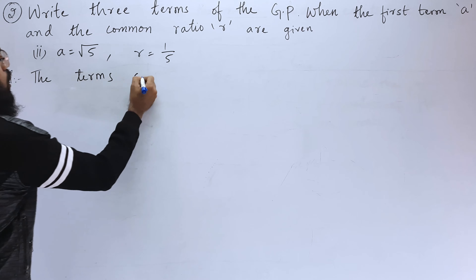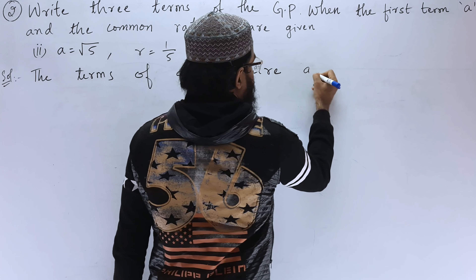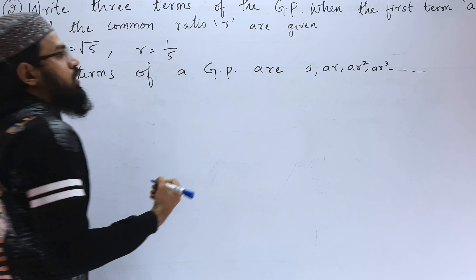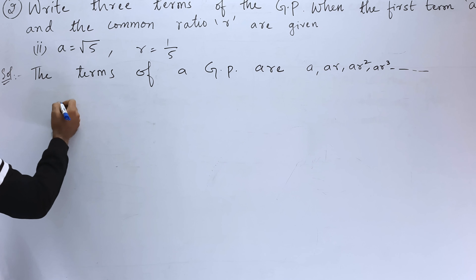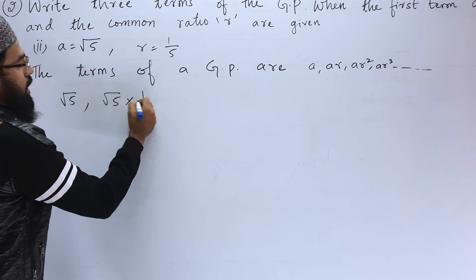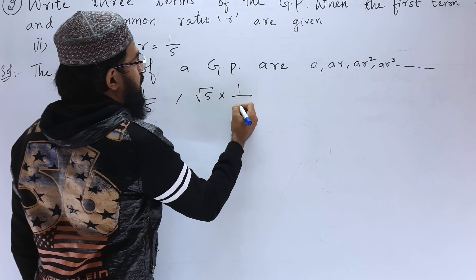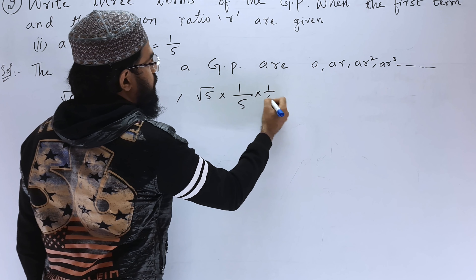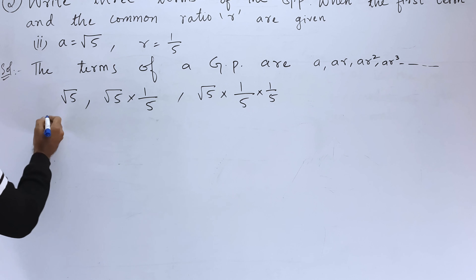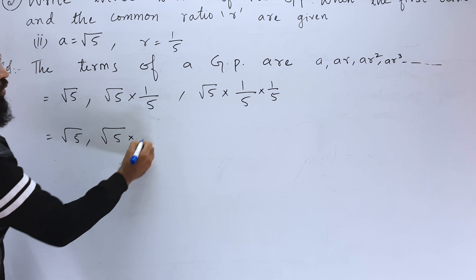Second bit: A equals root 5 and R equals 1 by 5. The terms of a GP are A, AR, AR², AR³, and so on. We have to find only the first three terms. The first term is A, which is root 5. The second term is root 5 into R, where R is 1 by 5.